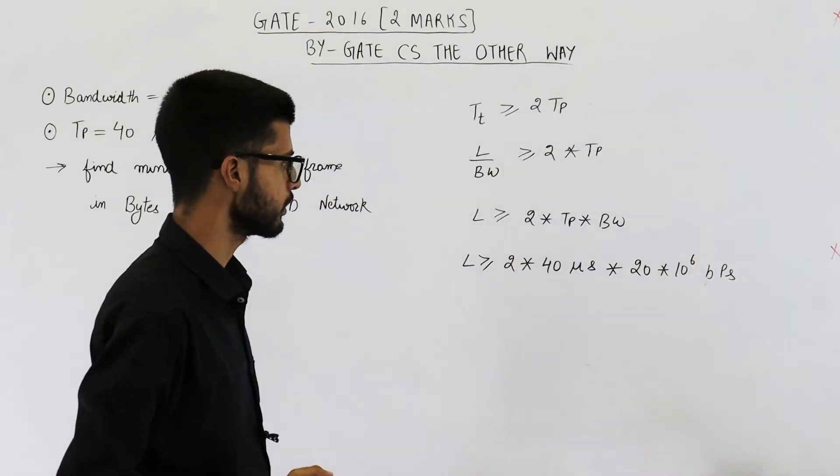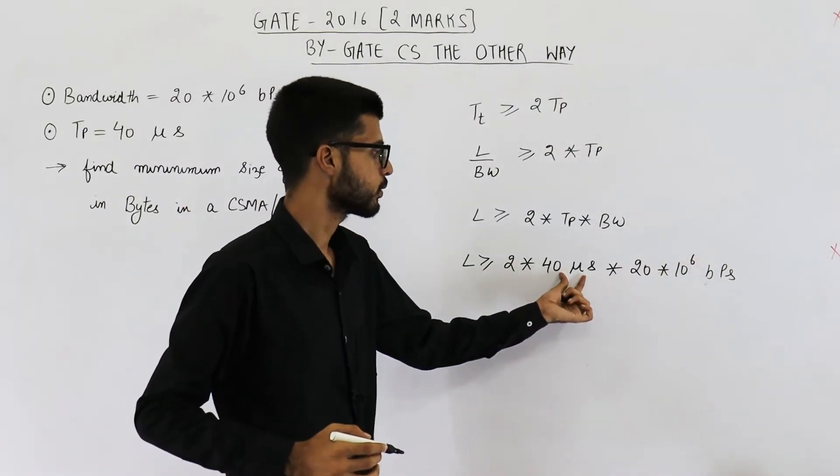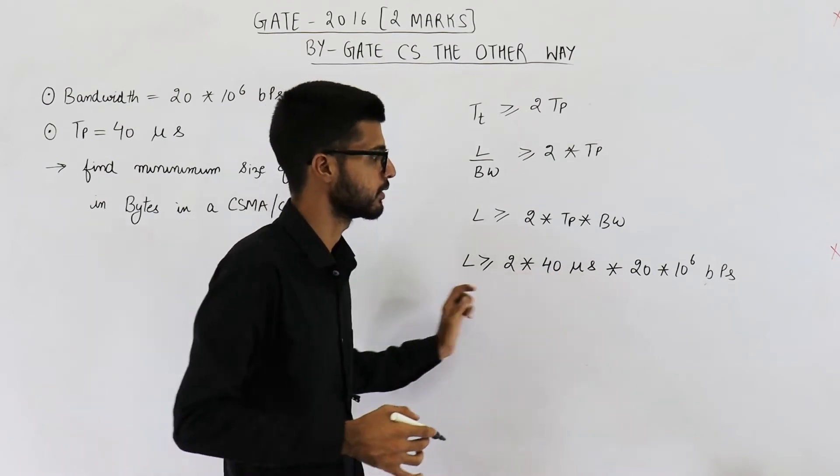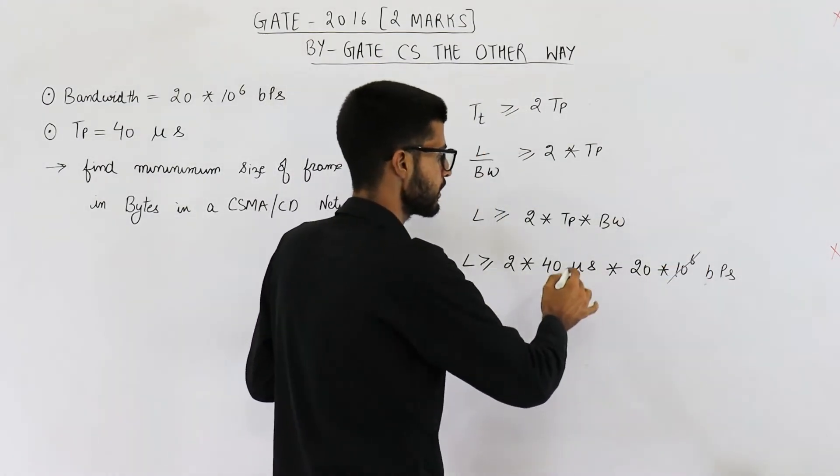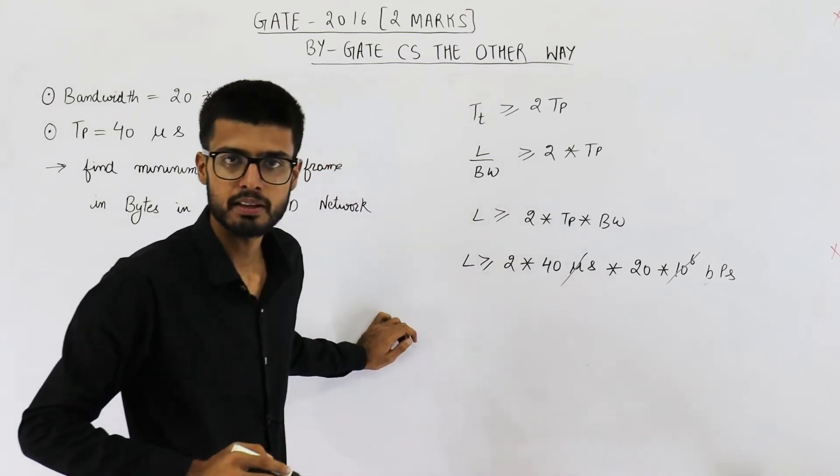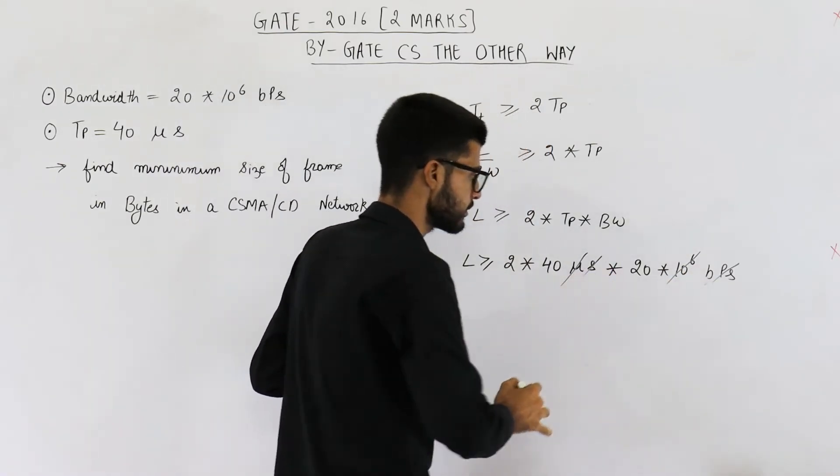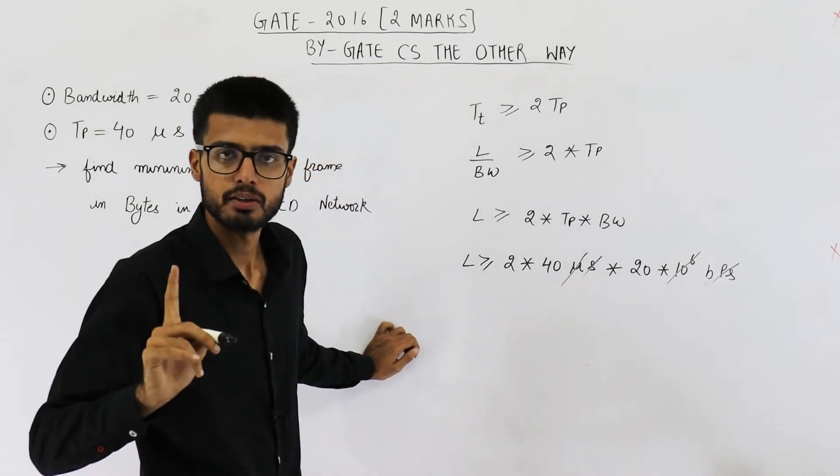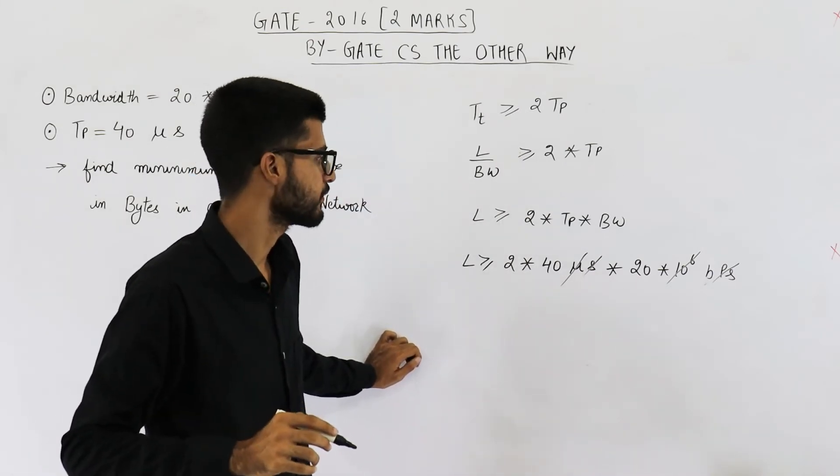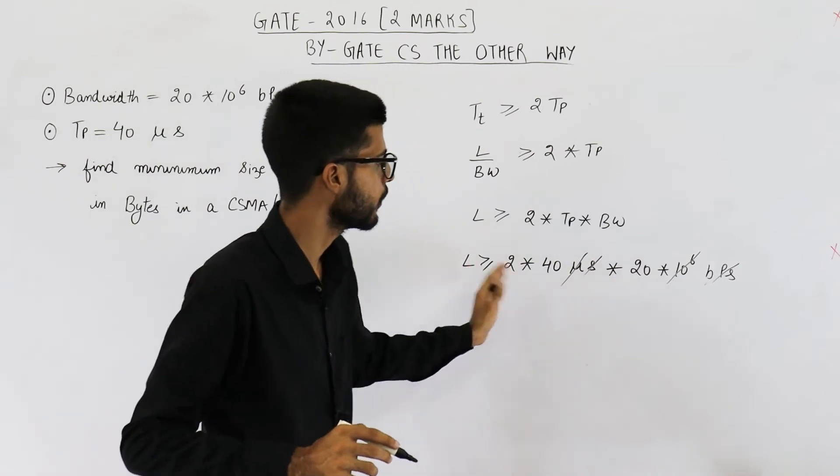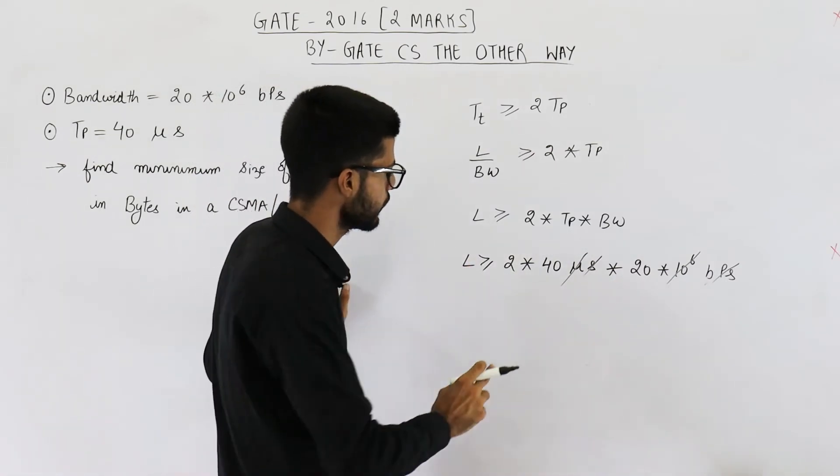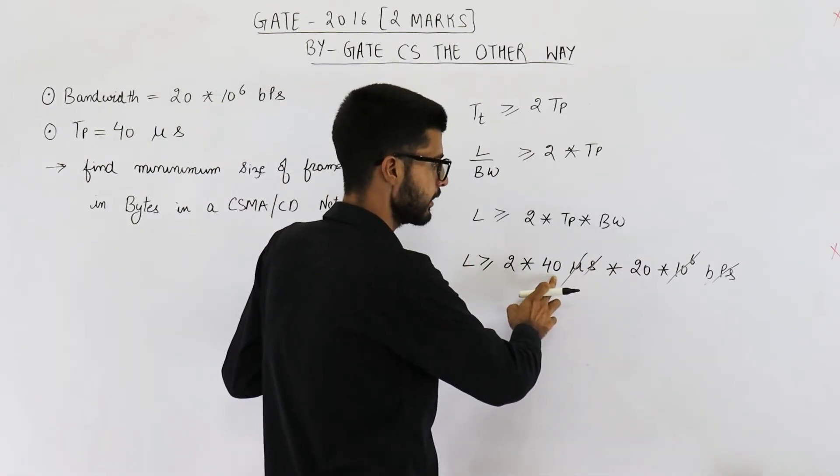Now you can notice microsecond means 10 raised to the power minus 6 seconds. So 10 raised to the power plus 6 and 10 raised to the power minus 6 will be cancelled. Per seconds and seconds will get cancelled. So the unit that is left is bits, because all other units are cancelled.